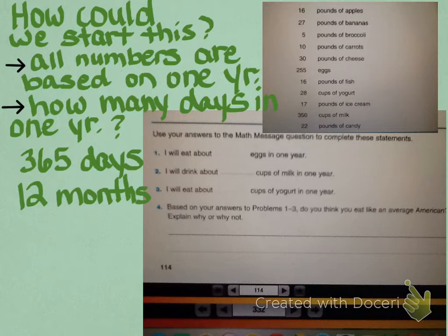But in your math journal, you're going to be asked to answer the following four questions. I will eat about blank eggs in one year. I will drink about blank cups of milk in one year. And I will eat about blank cups of yogurt in one year. And then you're going to have to explain how you figured out your answers there in number four.